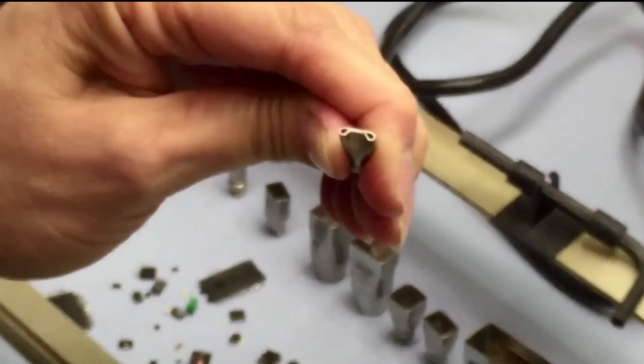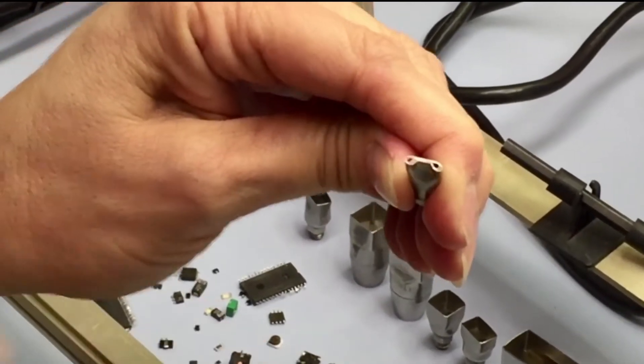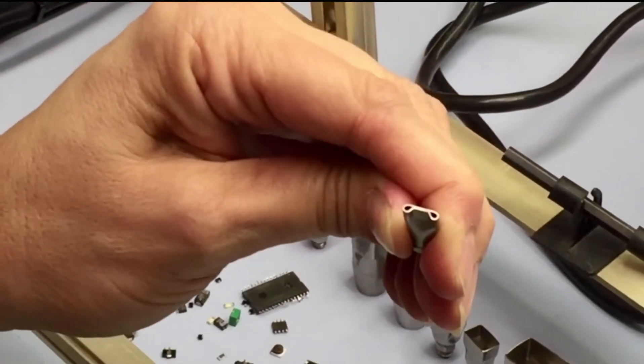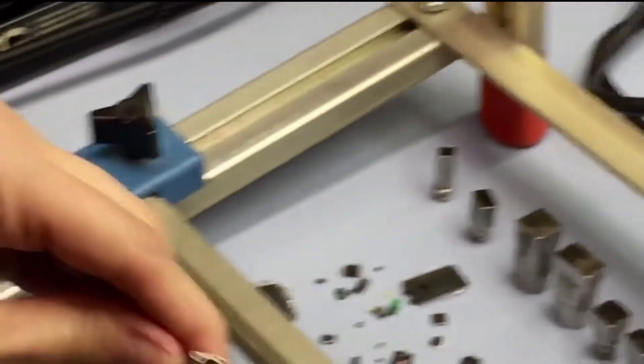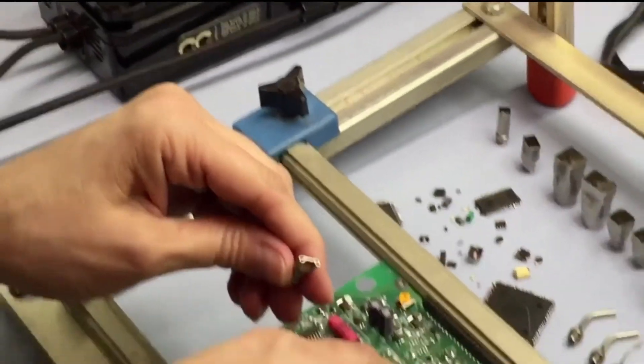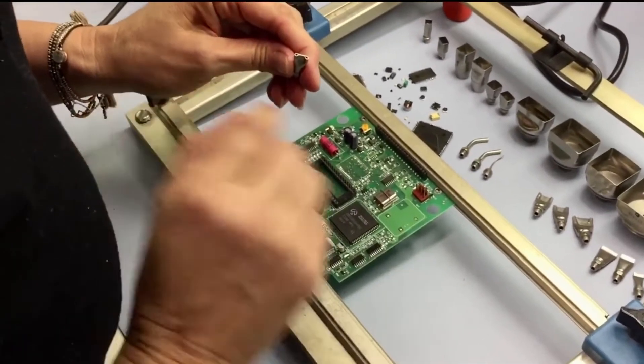And so you can pick your size. We have different sizes from larger to medium to small. We even have smaller than this depending on the size package that you have. For this particular application, we're going to remove this SMD, and we're going to use this dual flow tip.